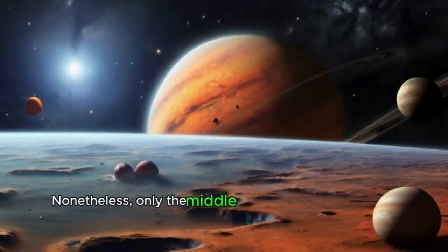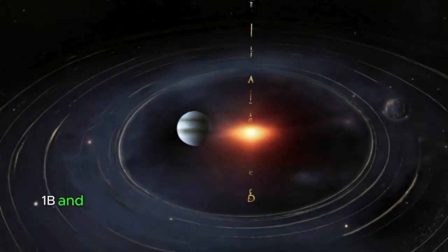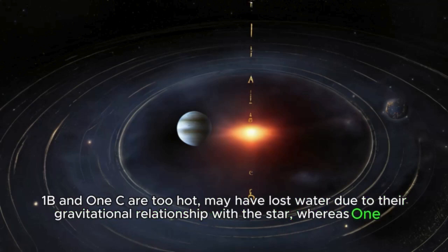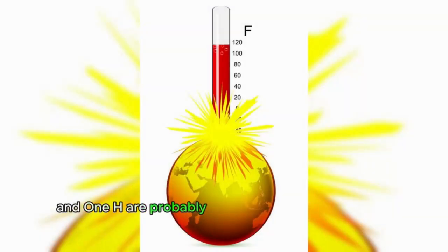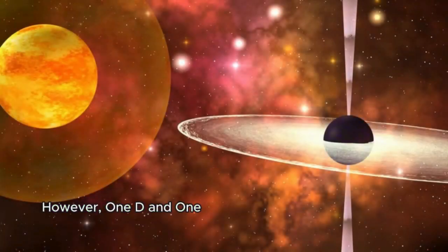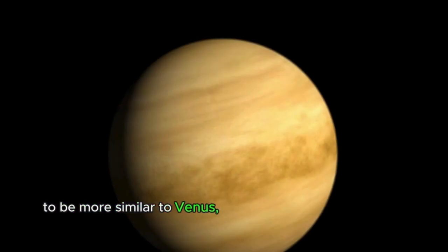Nonetheless, only the middle planets 1d and 1e meet the criteria to be on the list of potentially habitable planets. 1b and 1c are too hot, may have lost water due to their gravitational relationship with the star, whereas 1f, 1g, and 1h are probably not warm enough due to the weak greenhouse effect, or they're also quite hot. However, 1d and 1e still require extensive research, since conditions on these planets may turn out to be more similar to Venus, although 1e is very unlikely to fall into that category.